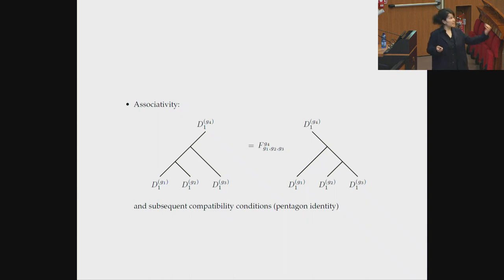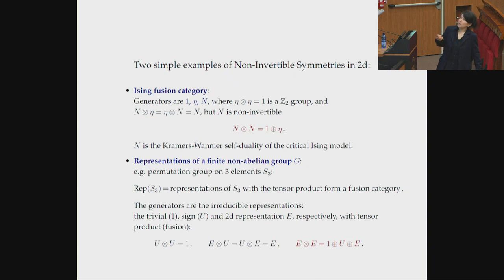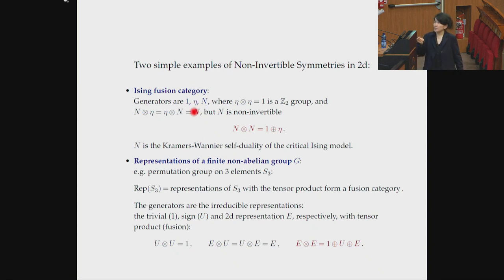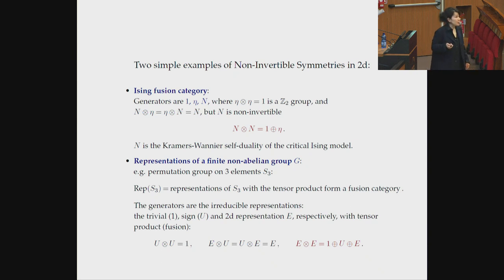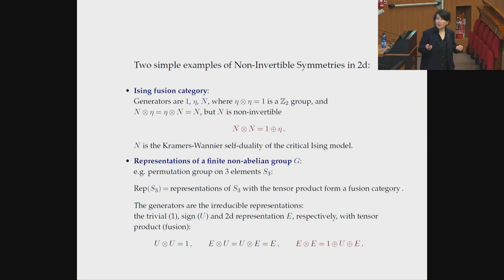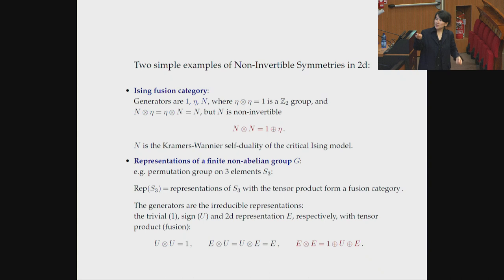The ones I will study are extremely simple: the Ising category and the representation category of a group. The Ising fusion category symmetry is realized at the critical point of the Ising chain. It has a Z2 generator eta and this non-invertible generator N: eta squares to 1, but N squares to 1 plus eta. This is the Kramers-Wannier duality symmetry. Another huge class of fusion category symmetries comes from representation categories of non-abelian groups: take a finite group G, associate representations to lines, and the fusion is given by tensor product decomposition.